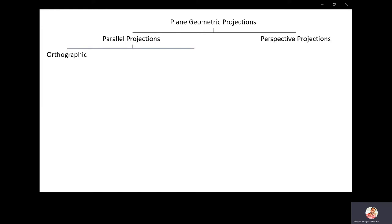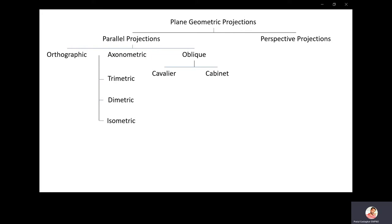There are two types of projections: parallel projection and perspective projection. Parallel projection is divided into three parts: orthographic projection, axonometric projection, and oblique projections. Axonometric projections are of three types: trimetric, diametric, and isometric. Oblique projections are of two types: cavalier and cabinet. Perspective projections are of three types: single point, two point, and three point. We are going to cover all these projections in our coming lectures.